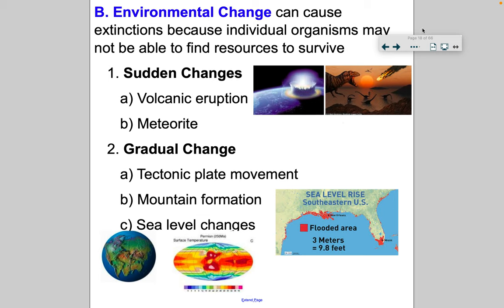Environmental change can cause extinctions because organisms can't find resources to survive. There are two ways the environment can change: sudden changes or gradual changes. Sudden changes are pretty disruptive — think volcanic explosions spewing hot gases and ash, blocking out sunlight, or meteorites striking Earth, throwing dust and particles into the air and causing general mayhem.